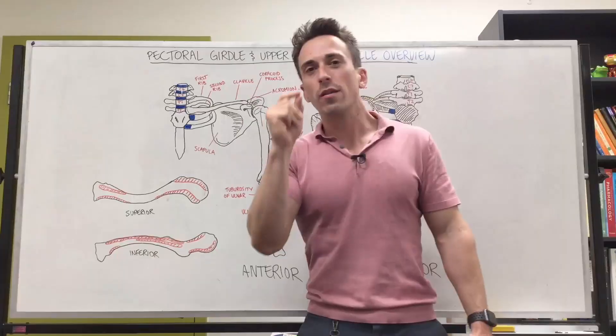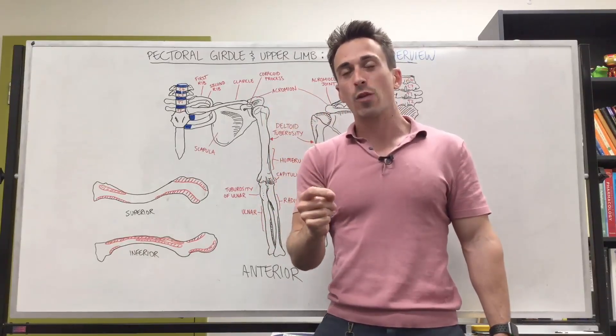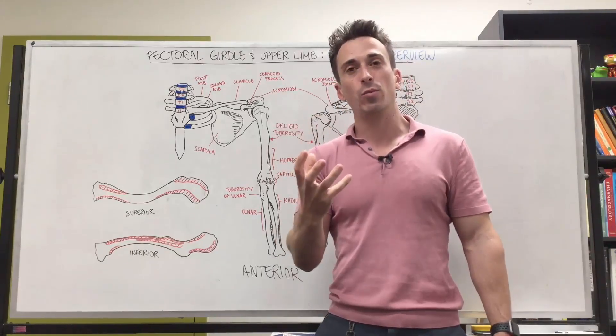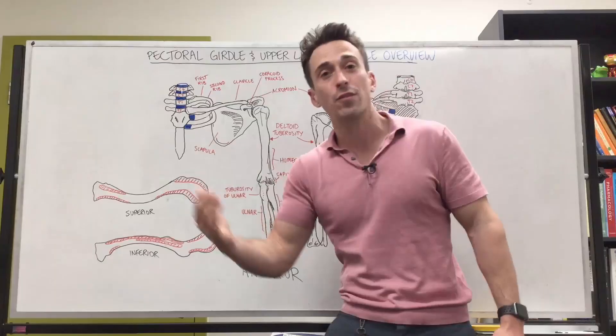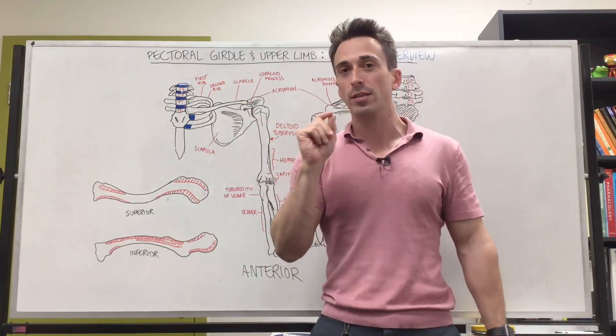Now the clavicle is one of the first bones, I think it actually is the first bone to ossify at around about five to seven weeks in utero. Ossify meaning harden. We know that a lot of our bones don't harden until after birth. Seems like the clavicle tends to ossify between five to seven weeks in utero.